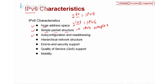Third, IPv6 supports auto-configuration and re-addressing. We can have multiple addresses and configure the address in an auto-configuration way. We do not necessarily need to use DHCP, even though we still can. We can just configure the router and the host can get the IP address from the router — we call this stateless addressing. IPv6 also allows hierarchical network addressing, referring to summarization. Since IPv6 has 128 bits, if you are doing routing it will be quite complex if you don't summarize it, so IPv6 allows hierarchical summarization.